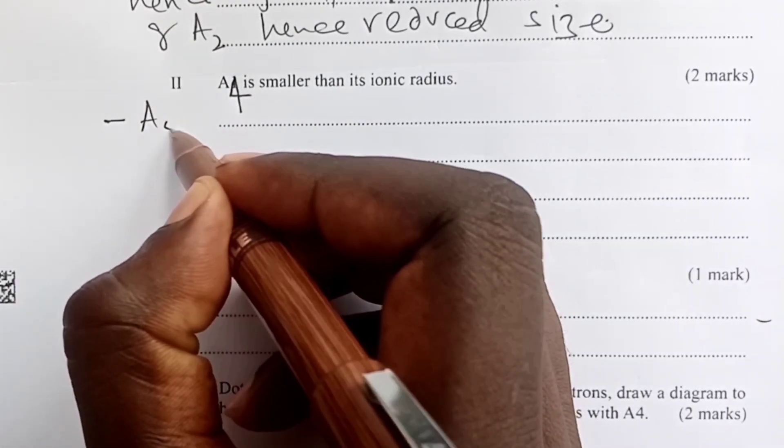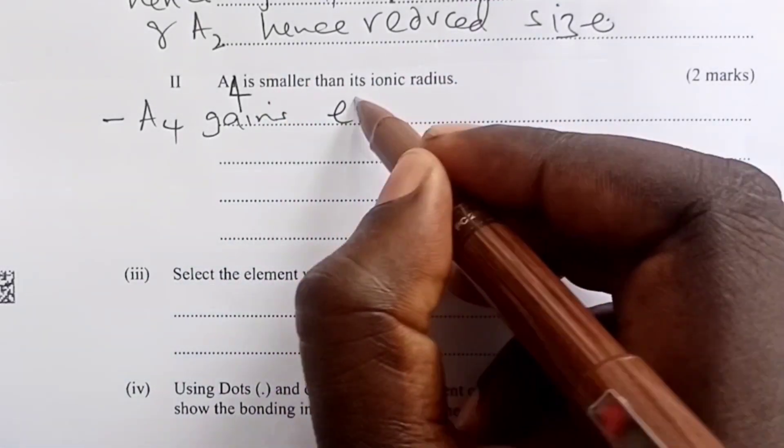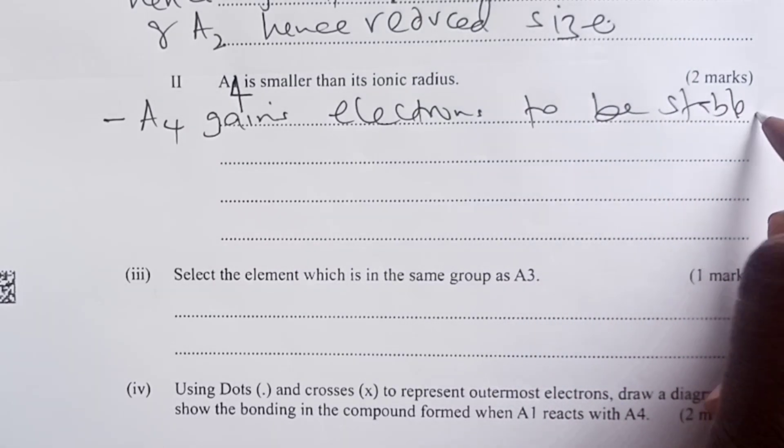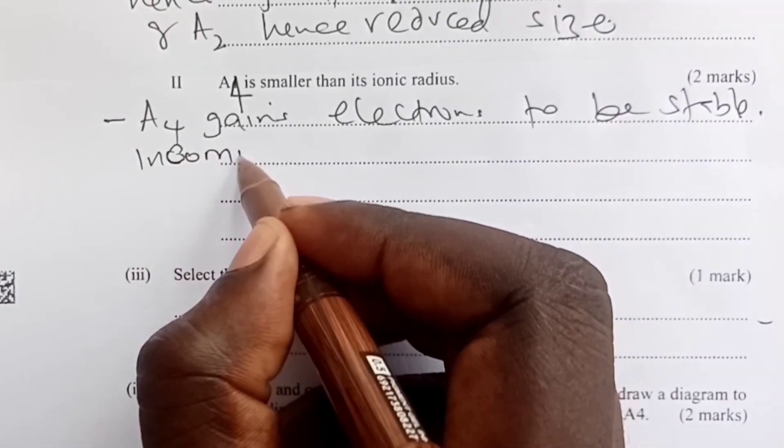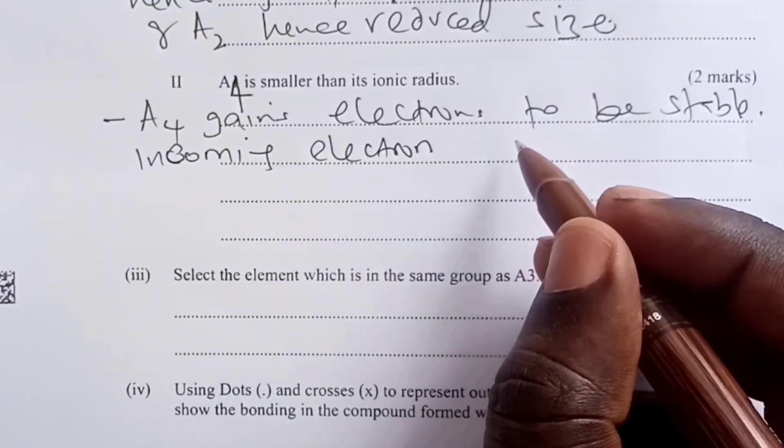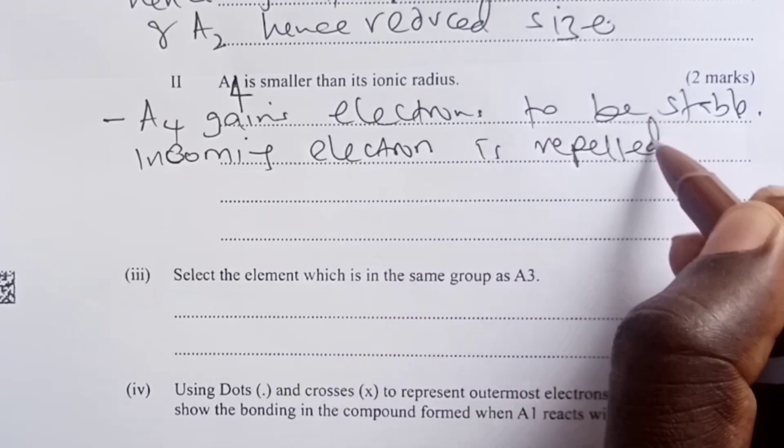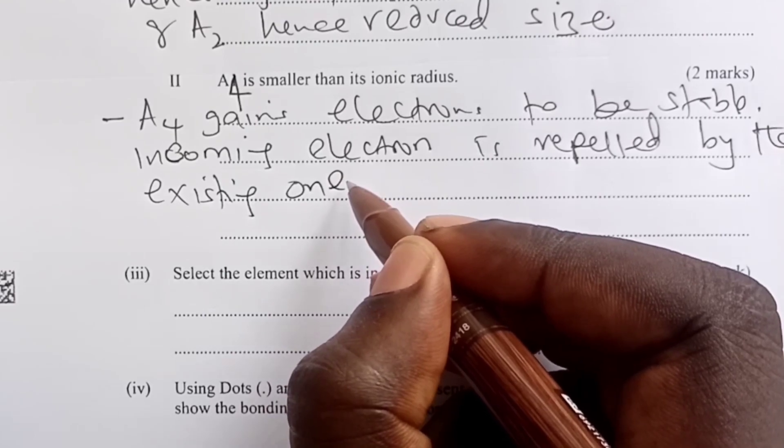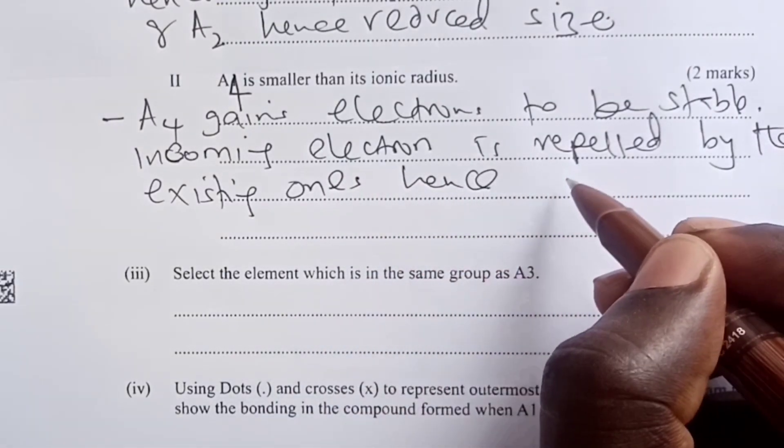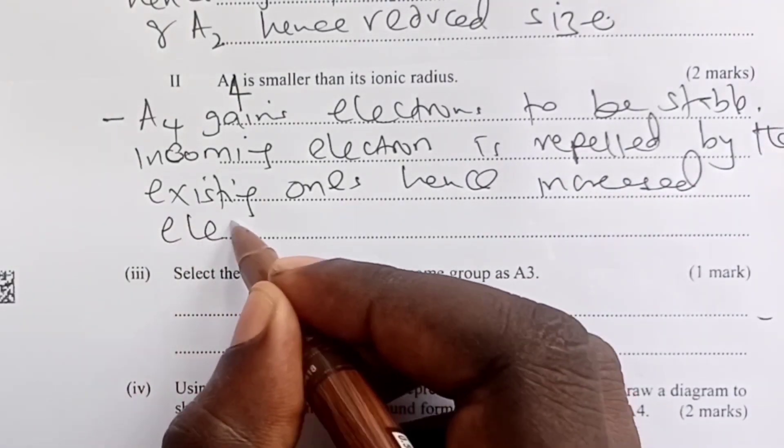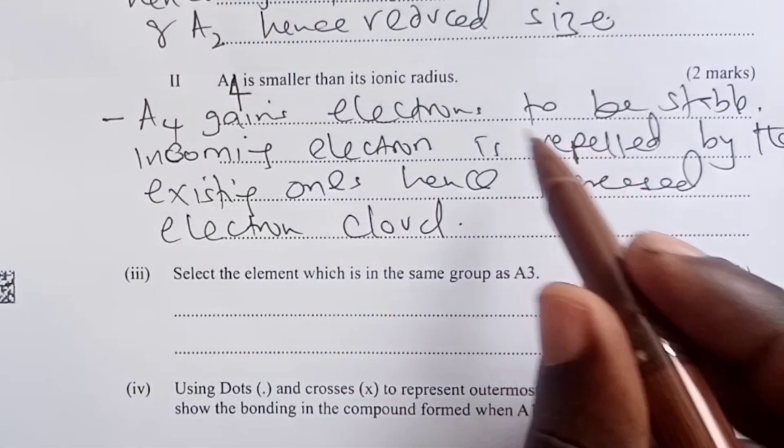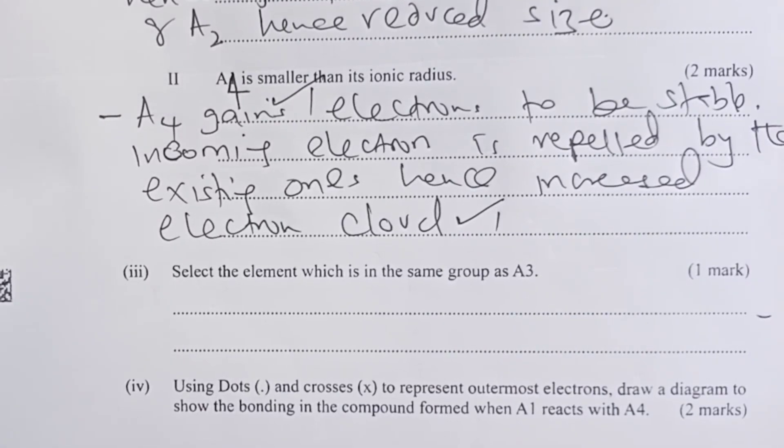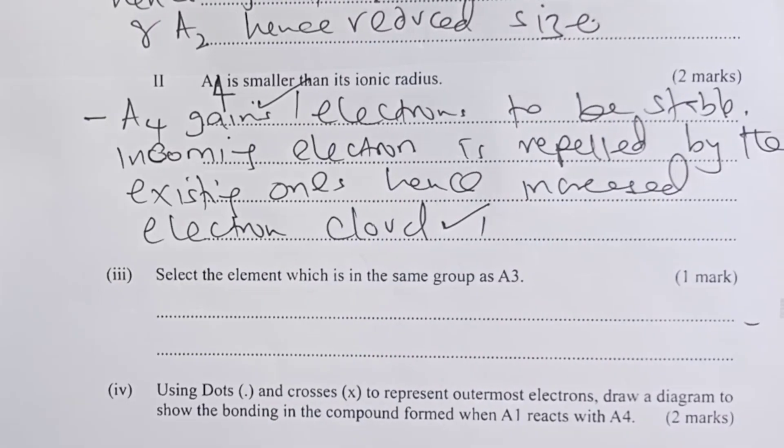The reason being that A4 gains electrons to be stable. So then what happens? The incoming electron is repelled by the existing ones, hence increased electron cloud. So gaining electrons one mark, explaining the increased repulsion another mark to give the two marks for that section. So we proceed to the next question.